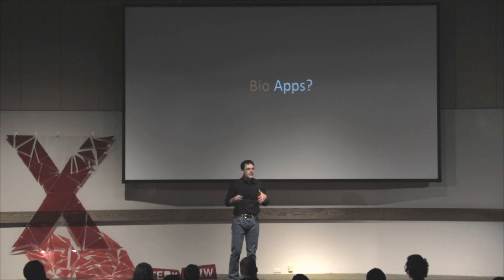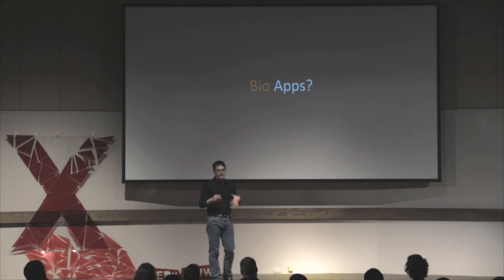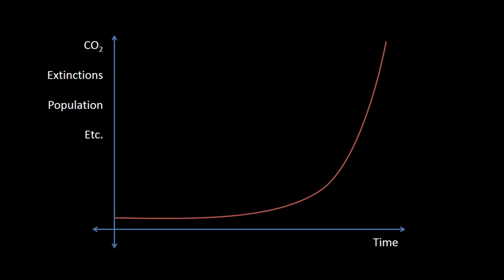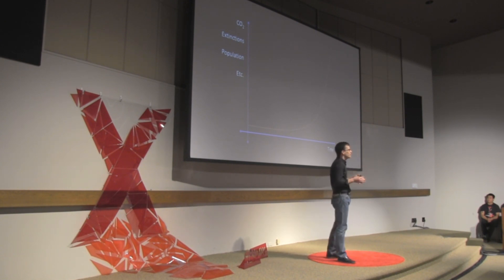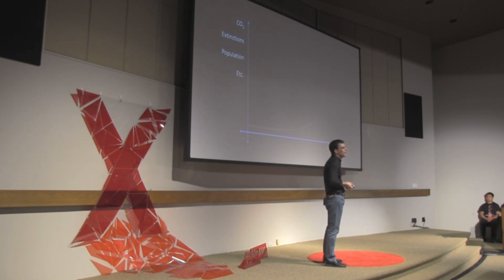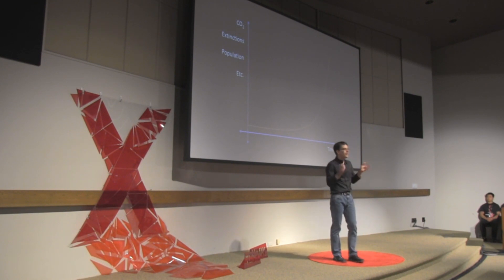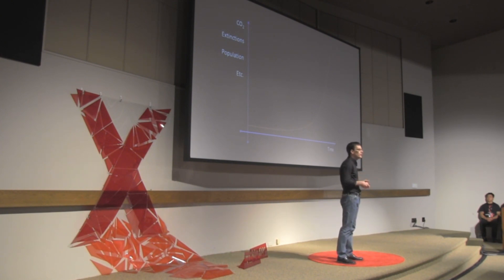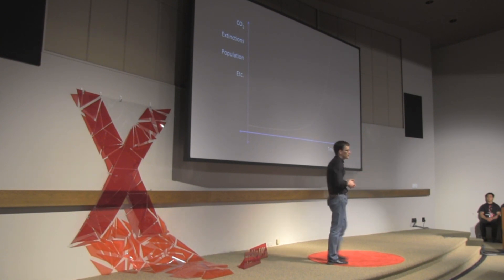I actually think that computer programming applied to biology could do even more amazing things than that. I think the sky's the limit. If you look at nature and all of the amazing things that it does, we could learn to do that too someday if we could figure out how to program biology. What really drives me to want to program biology is graphs like this: time on the x-axis and alarming things on the y-axis — carbon dioxide, extinctions per year, population size. All of these are indicators of a biosphere that's essentially crashing. From a computer science point of view, that's alarming because hundreds of millions of years of code is just going poof. Are we going to wait another hundred million years for more code to evolve, or are we going to learn to program like nature does? I think we owe it to nature to figure out how to learn to program biology.